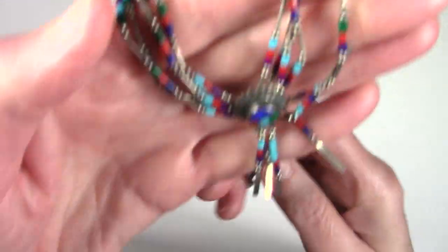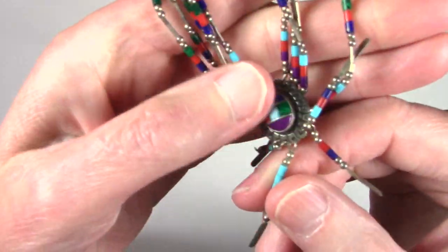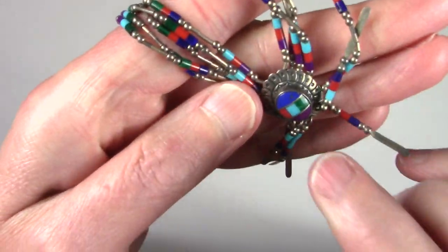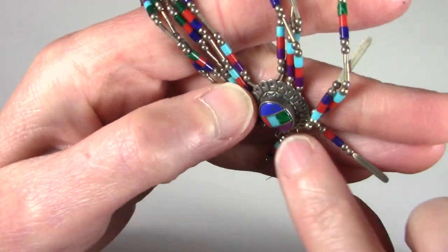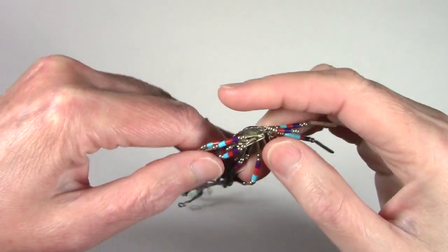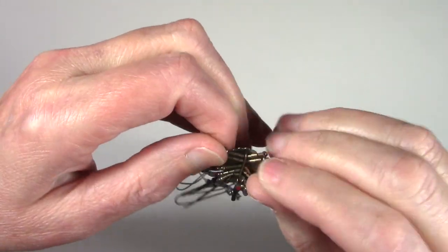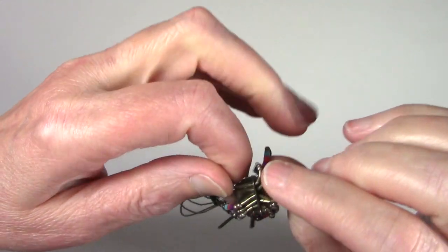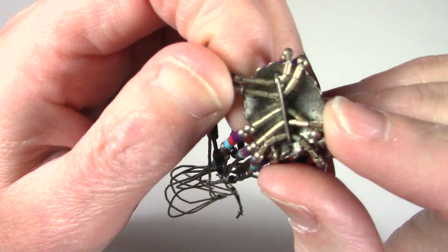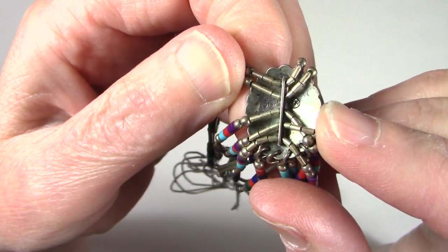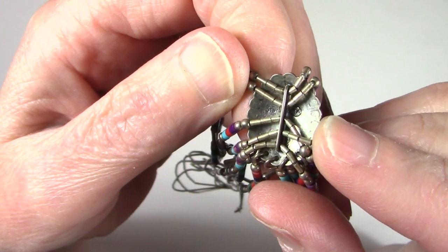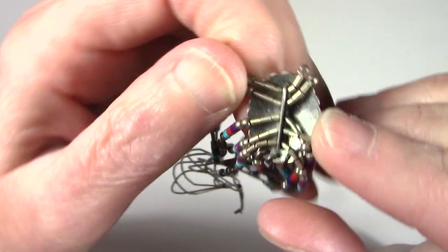So it has this really great beaded design and inlaid stones here in the pendant. And then back here, it's marked sterling with somebody's initials. So let's see if we can take a closer look. There we go. Okay, fun.